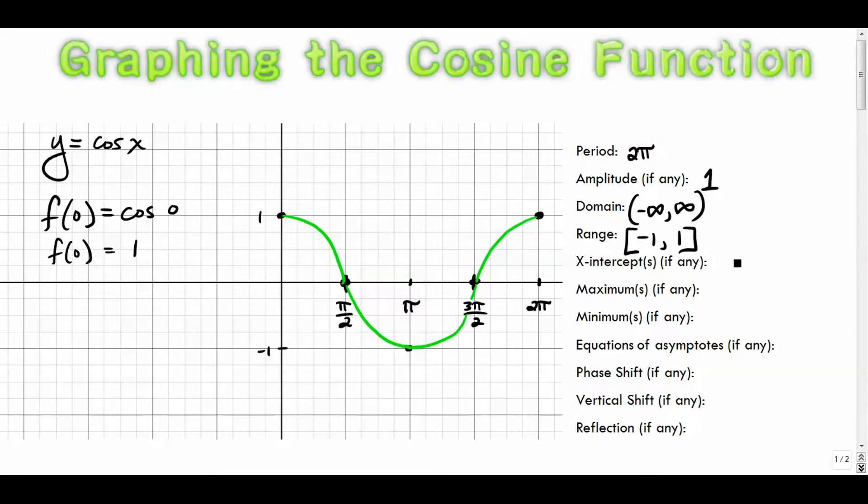The x-intercepts, of course, we see one at pi over two and another one at three pi over two. Right here and right here. And they would, of course, keep repeating itself. There would be another one here and so on and so forth. Every pi units.